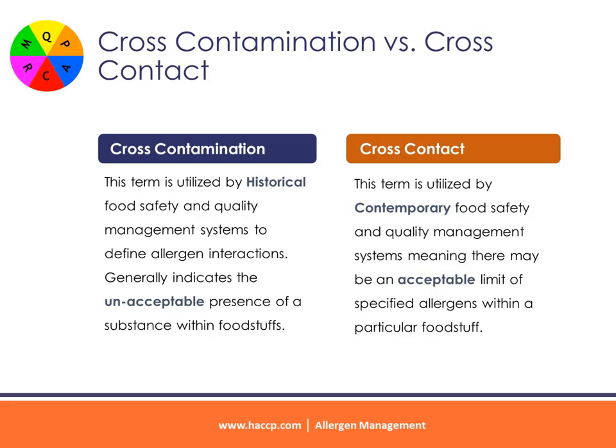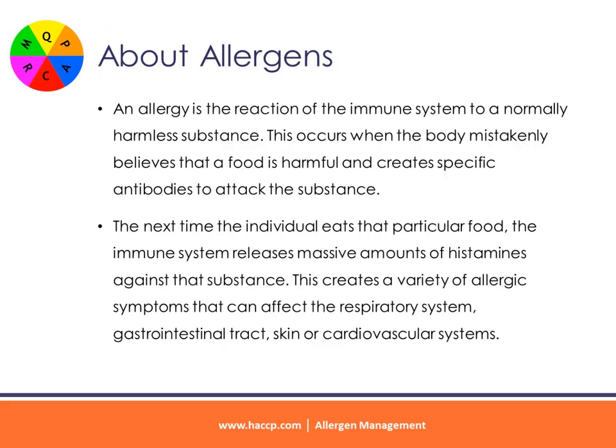About allergens: an allergy is the reaction of the immune system to a normally harmless substance. This occurs when the body mistakenly believes that a food is harmful and creates specific antibodies to attack the substance. The next time the individual eats that particular food, the immune system releases massive amounts of chemicals, including histamines, which are intended to protect the body against the substance.